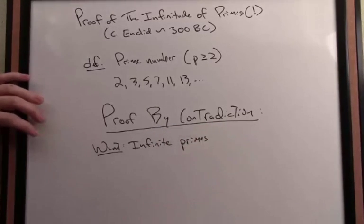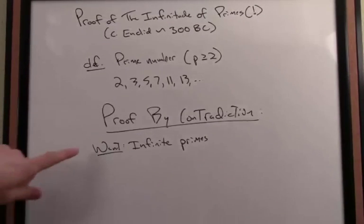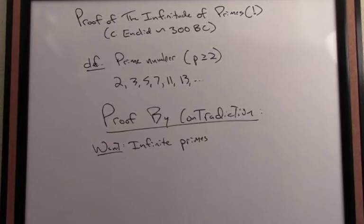The way proof by contradiction works, it sounds a little bit backwards the first time you see it. We are actually going to assume that this assertion or claim is false and then arrive at some inherent contradiction.